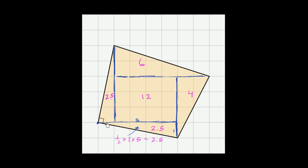So if we want to find the total area, we just add all of these together. So 2.5 plus 2.5 is 5, plus 4 is 9, plus 6 is 15, plus 12 is 27. So it has a total area of 27.